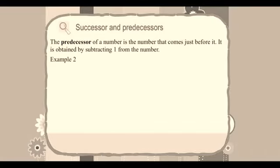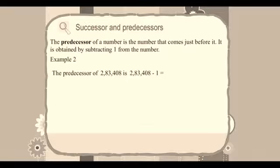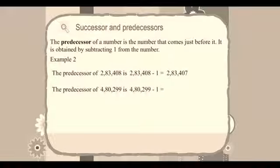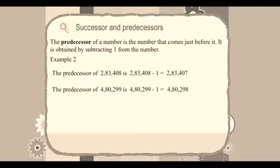Example 2: The predecessor of 283,408 is 283,408 minus 1 equals 283,407. The predecessor of 4,80,299 is 4,80,299 minus 1 equals 4,80,298.